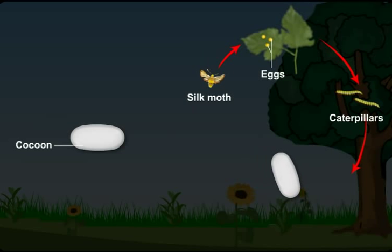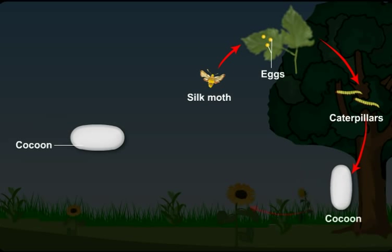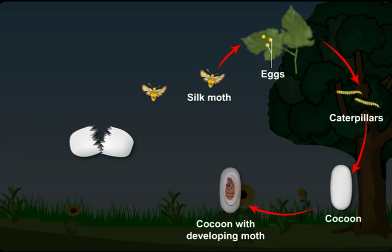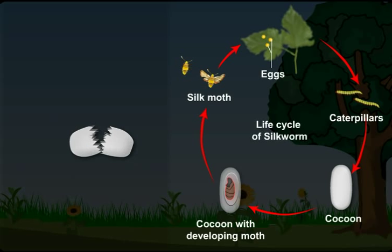Further development of silkworm takes place inside the cocoon. After some time, the pupa enters the adult stage and emerges out of the cocoon as a moth. The entire process thus continues and is known as the life cycle of a silkworm.